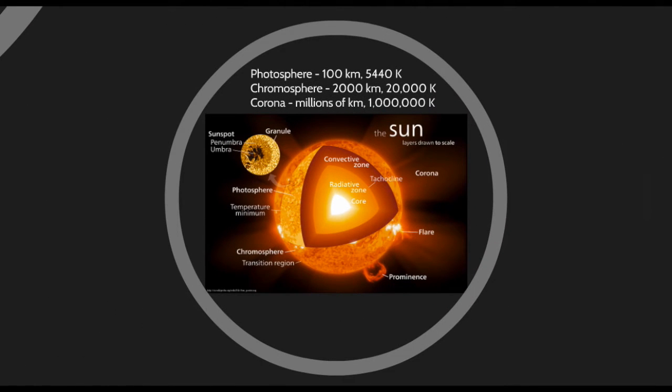As a form of review, we have a photosphere, which is about 100 to 400 kilometers thick with a mean temperature of 5,400 degrees Kelvin. The chromosphere is a few thousand kilometers thick and reaches temperatures of 20,000 Kelvin. And a corona, which is millions of kilometers thick and can reach millions of degrees Kelvin.